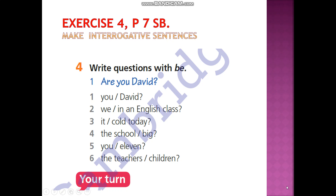Exercise number 4, page 7, student book. You should make interrogative sentences — write questions with 'be'. For example: You, David — Are you, David? We, in English class — Are we in English class?